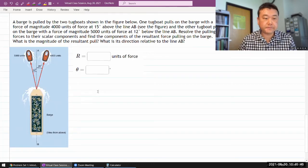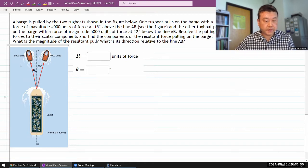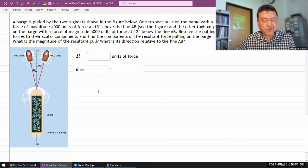Alright, so the question says a barge is pulled by two tugboats as shown in this figure. One tugboat pulls on the barge with some units of force at some angle, the other tugboat pulls at some magnitude at the other angle. Resolve the pulling forces to their scalar components.